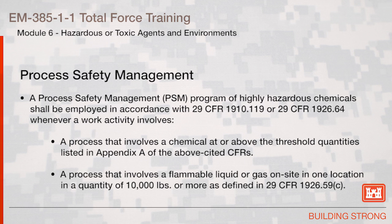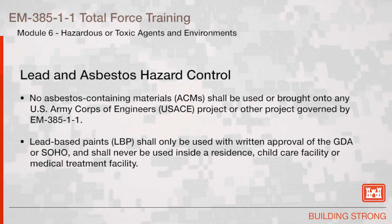A process safety management program of highly hazardous chemicals shall be employed in accordance with 29 CFR 1910.119 or 29 CFR 1926.64 whenever a work activity involves a process that involves a chemical at or above the threshold quantities listed in Appendix A of the above cited CFRs, or a process that involves a flammable liquid or gas on site in one location in a quantity of 10,000 pounds or more as defined in 29 CFR 1926.59(c).